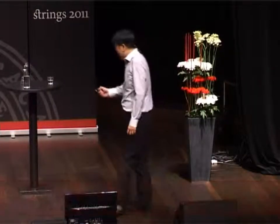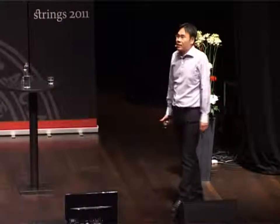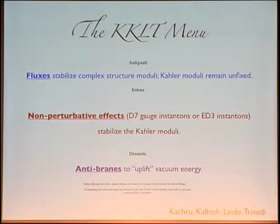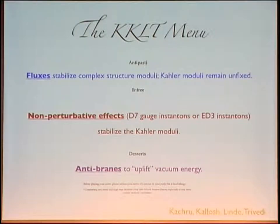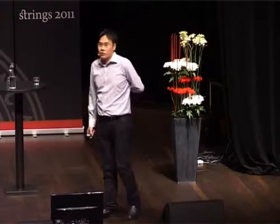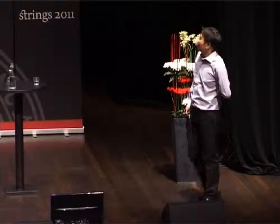Many proposals for constructing the de Sitter vacuum have been suggested. The most popular one is perhaps the KKLT scenario. This scenario is usually presented in steps: first, background fluxes generate the potential for the dilaton and complex structure moduli, stabilizing them while leaving the Kähler moduli unfixed. Then non-perturbative effects from gauge dynamics or Euclidean D-instantons are used to stabilize the remaining moduli. However, one oftentimes ends up in an AdS vacuum, so anti-branes are added to uplift the vacuum energy. This is also a starting point for many string inflationary models.